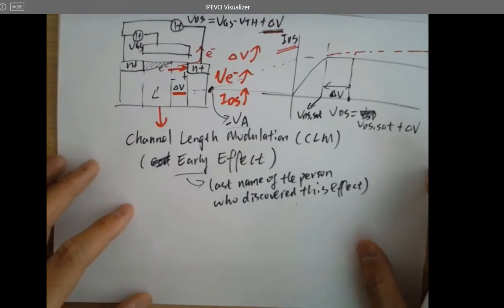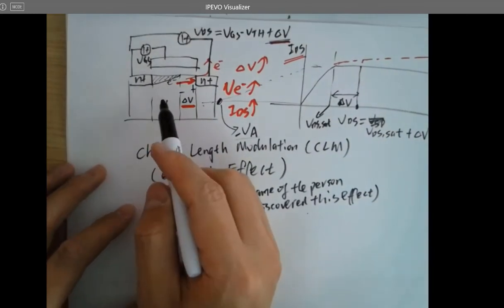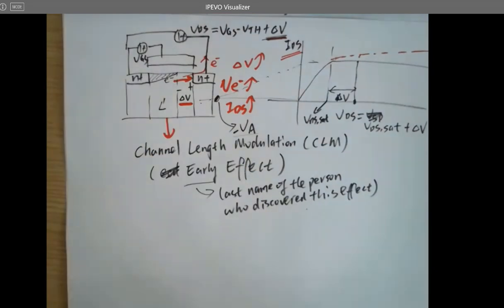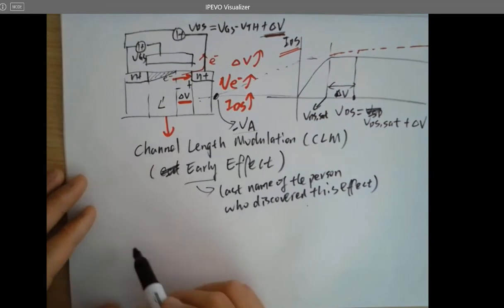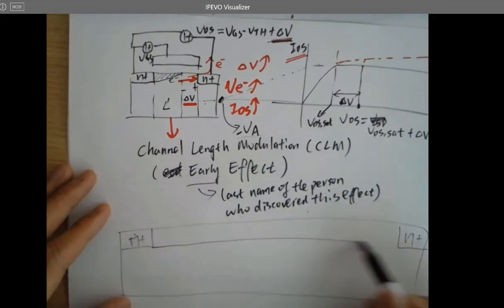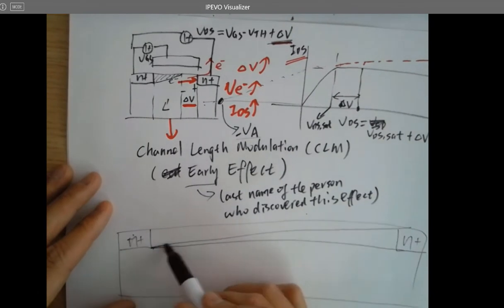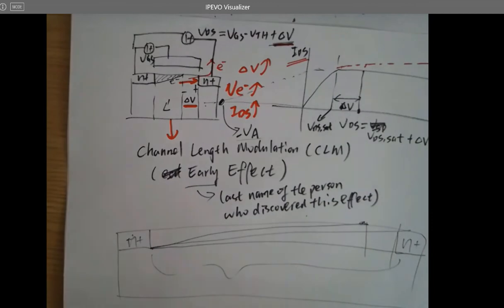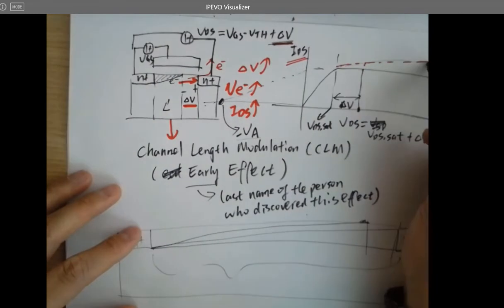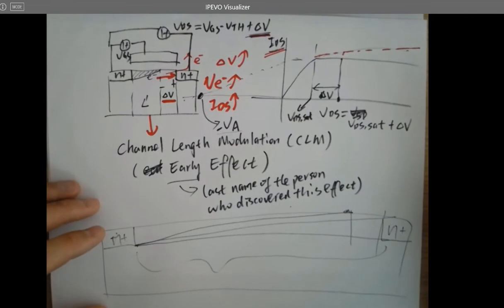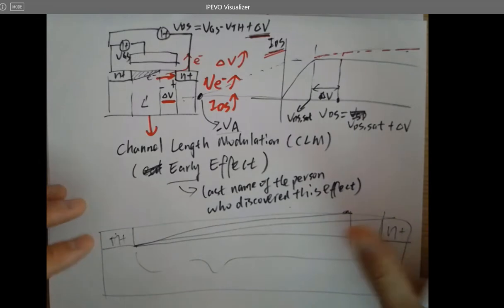This is very significant when the foundry process is scaled down to a very short channel. For a large transistor, the channel length modulation effect is tiny compared to the entire channel length. But for anything smaller than 200 nanometers, it becomes significant and gives you a non-constant IDS current. It's only significant for small technologies, not for something like 500 nanometer technology.